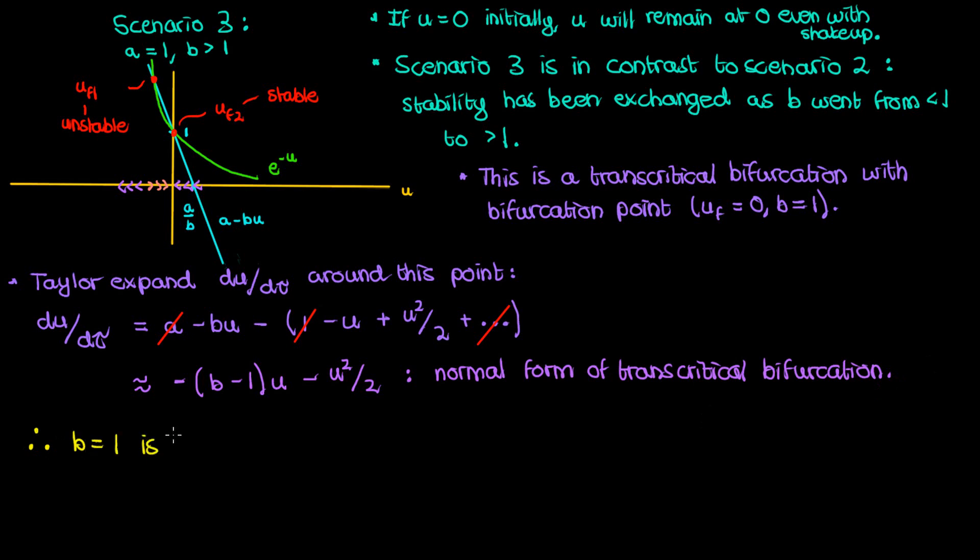So you can consider b equals one to be the threshold condition for an epidemic. If b is less than one then we've got an epidemic. People will get infected and die at high rates. However if b is greater than one then we don't have an epidemic.